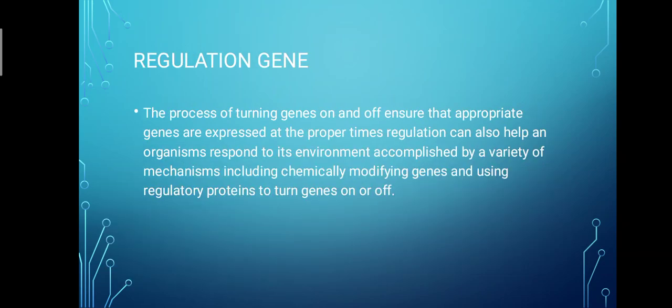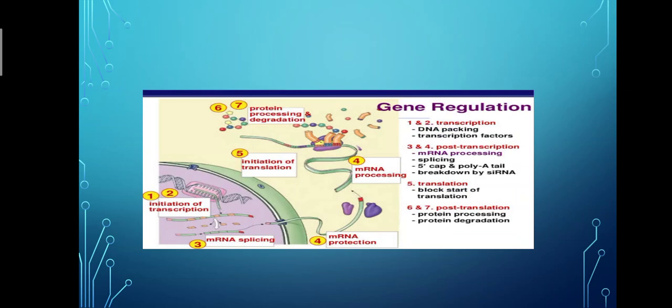Regulation gene. The process of turning genes on and off ensures that appropriate genes are expressed at the proper times. Regulation can also help an organism's response to its environment, accomplished by a variety of mechanisms including chemically modifying genes and using regulatory proteins to turn genes on or off.